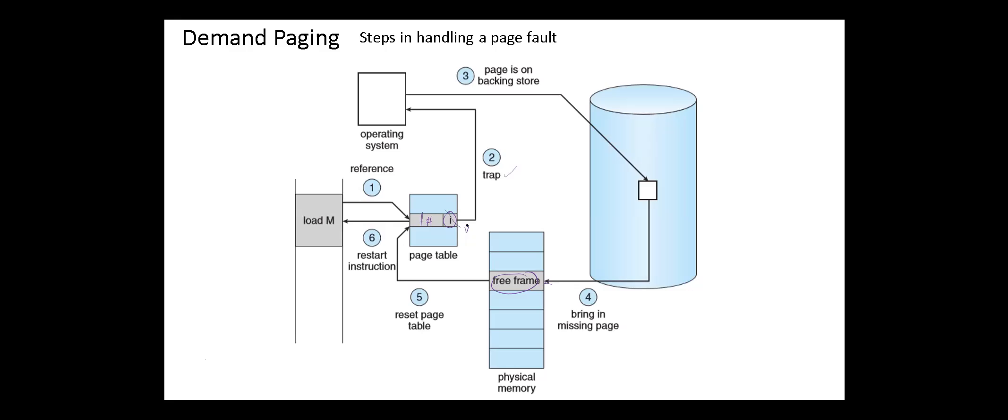When the CPU is allocated to this process, the instruction is restarted, but now we have the required page in memory. Now the question is: what if we haven't a free frame in physical memory?